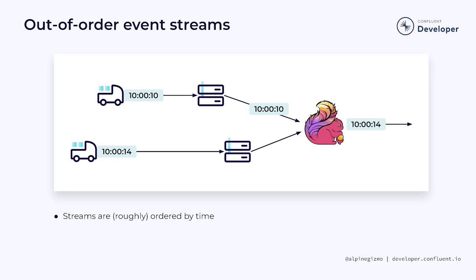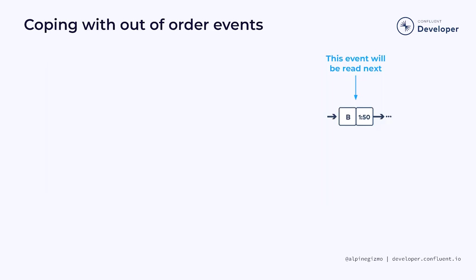When working in event time, it is possible for event streams to be perfectly in order by time, but very often event streams are only approximately ordered by their timestamps. This can happen whenever events can take different paths and experience different delays. This is especially common in situations involving mobile devices, where the event that occurred a few seconds later, at 14 seconds past 10 o'clock, ends up being processed first because it experiences less delay than the earlier event.